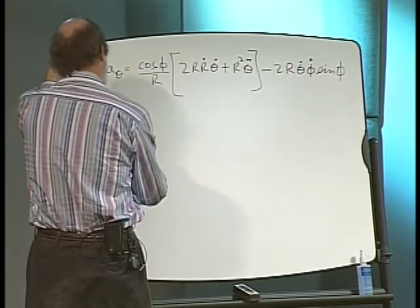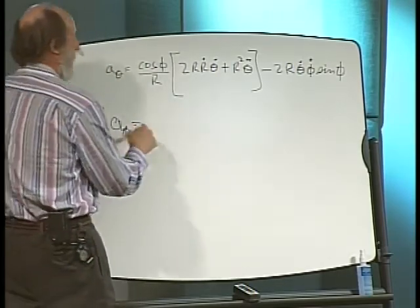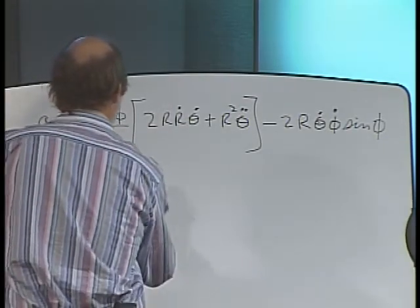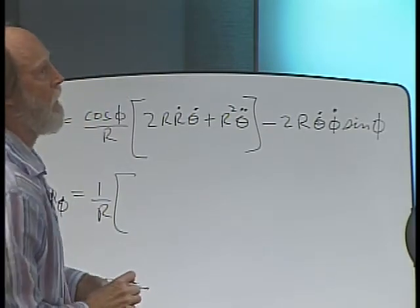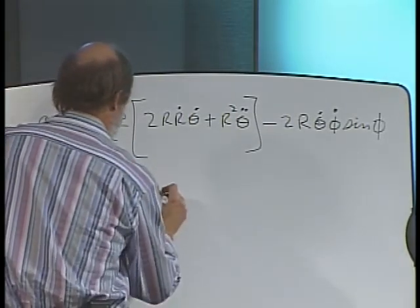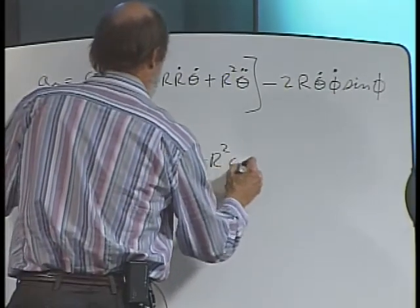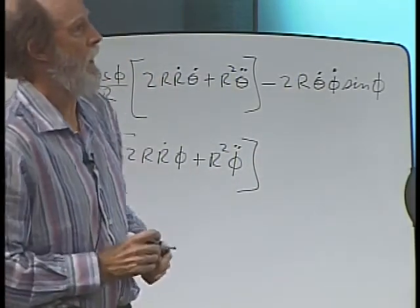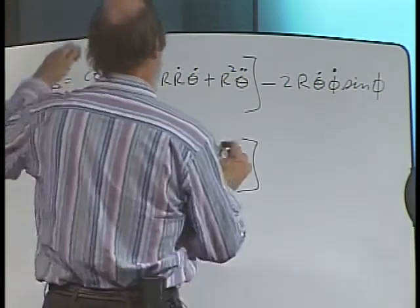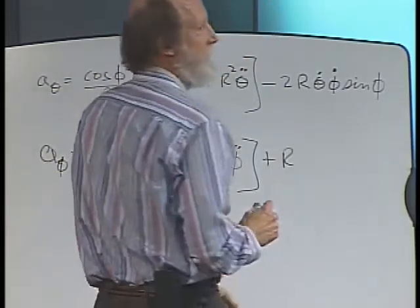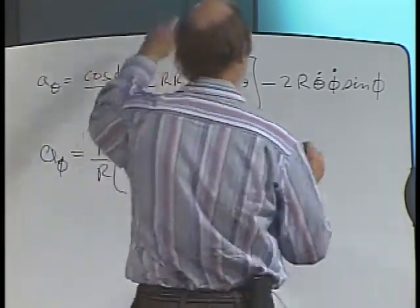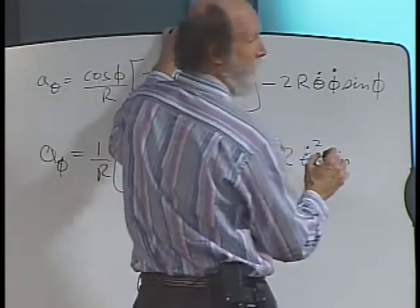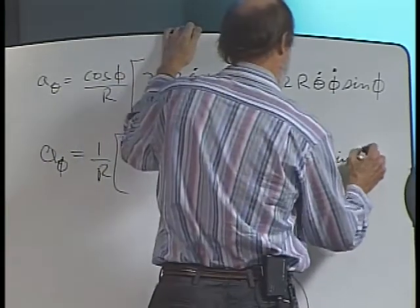On the phi-directed term of the acceleration, it's given as one over capital R times the time derivative of R squared phi dot — same kind of deal: two R R dot phi dot plus R squared phi double dot. And then we have to add that last term: plus R theta dot squared sine phi cosine phi.